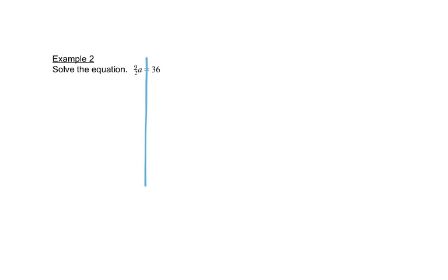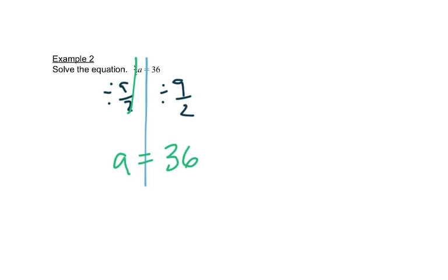Now let's solve this. We'll draw a line straight down through the equal sign. We have 9/2 times A, so the opposite of multiplication is division. We're going to divide both sides by 9/2. On the left, this cancels out and leaves me with just A. On the right, we need to figure out what 36 divided by 9/2 is — you can put that into your calculator, just make sure your fraction is in parentheses. Doing that, I get A equals 8.